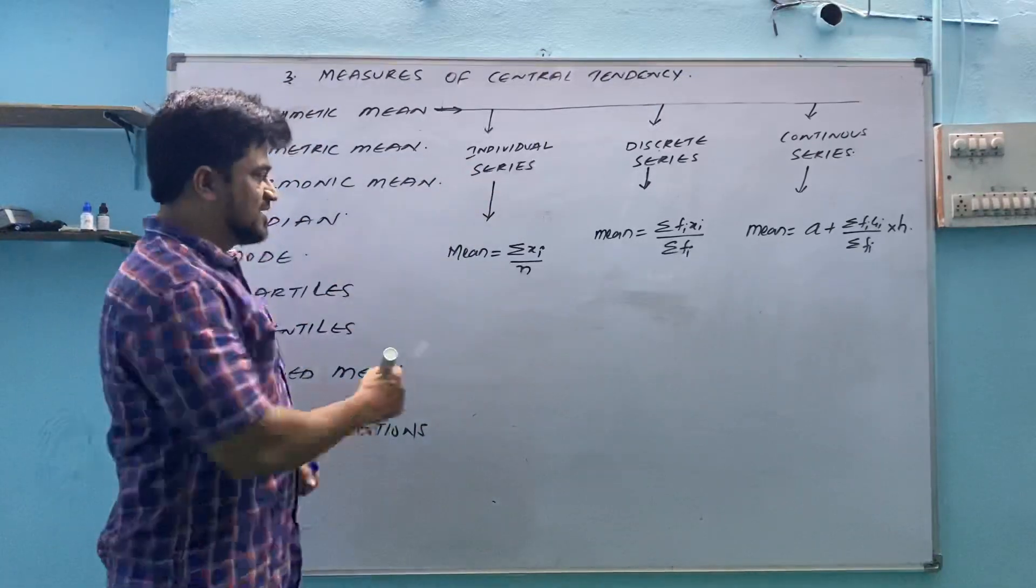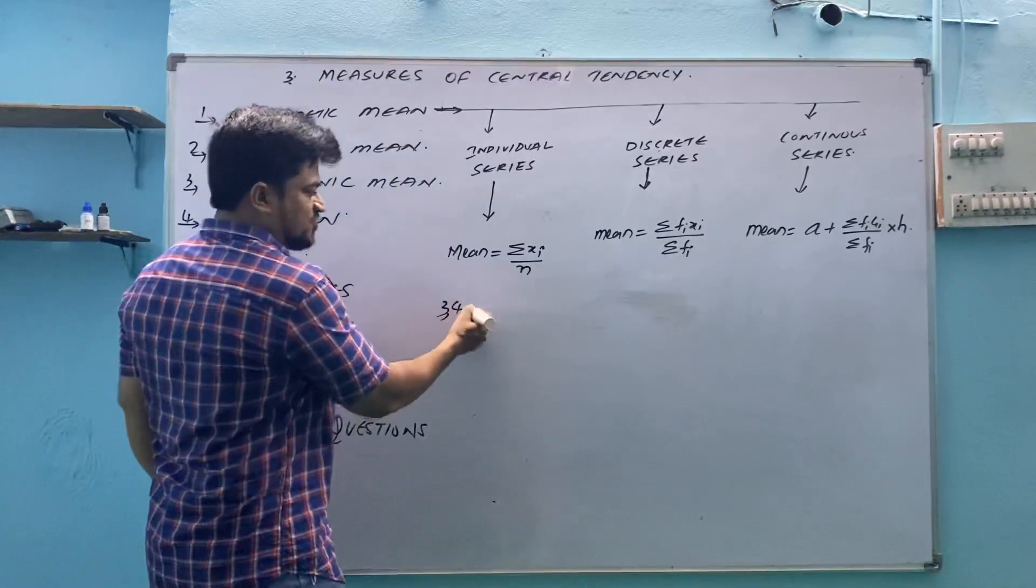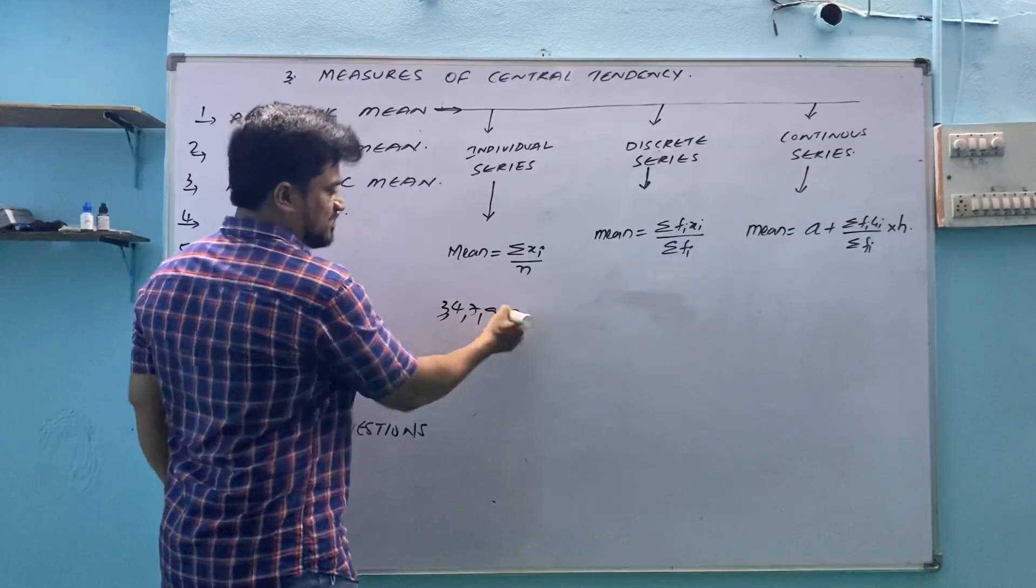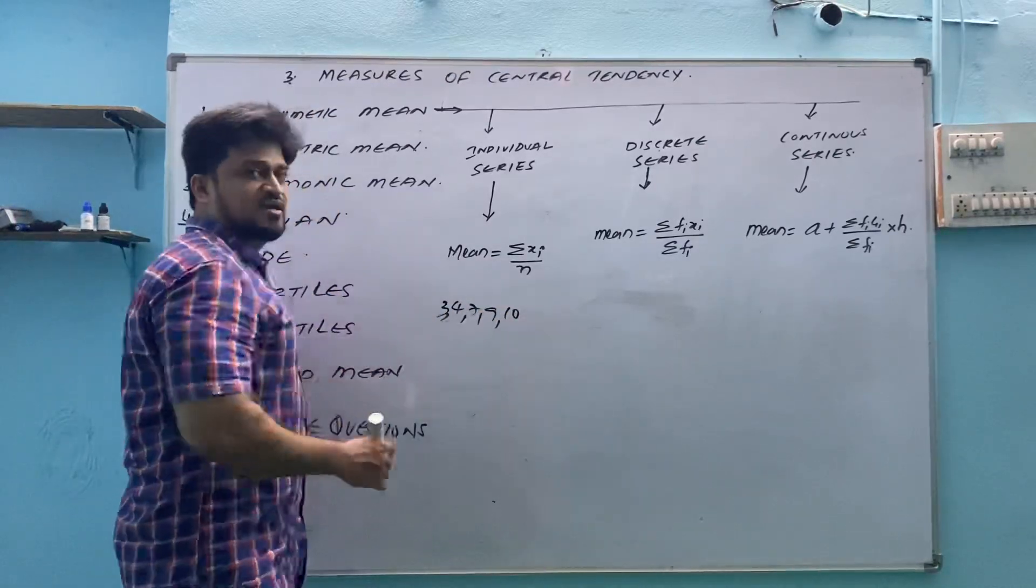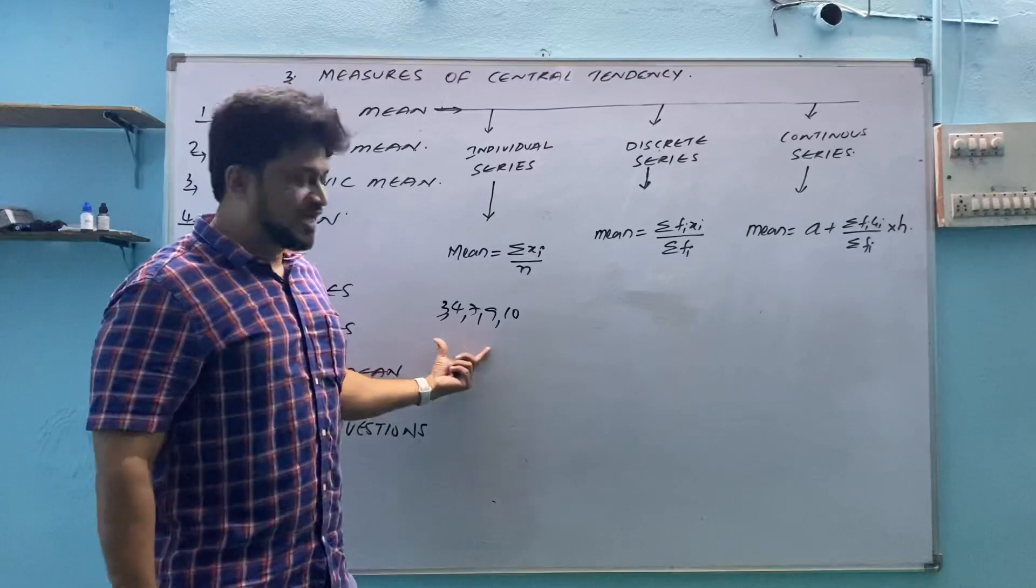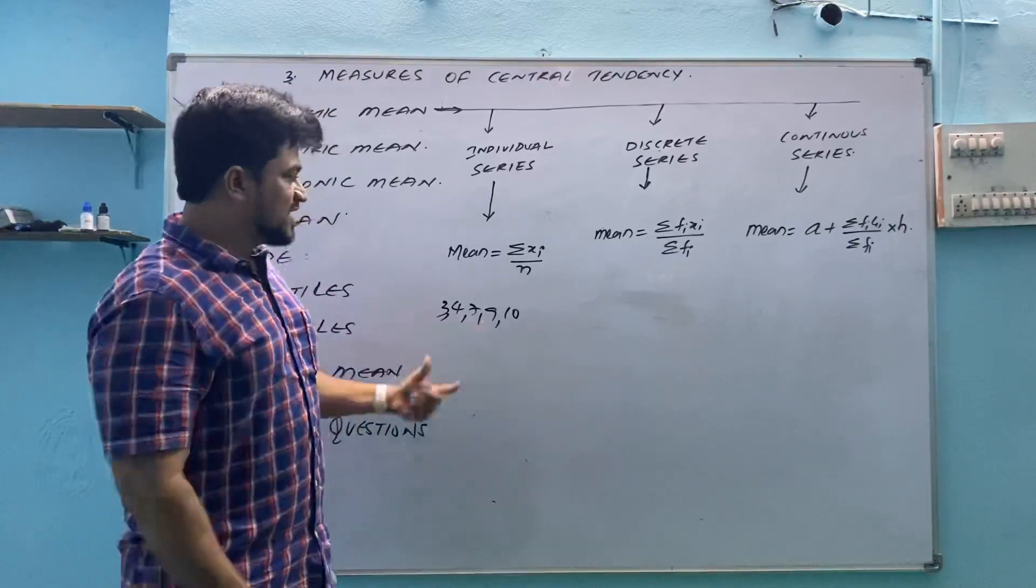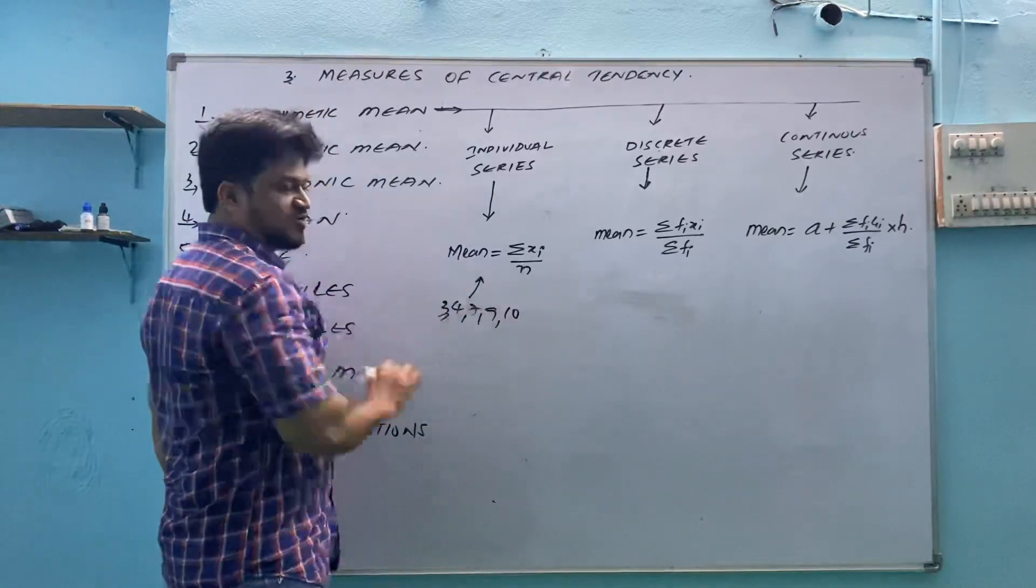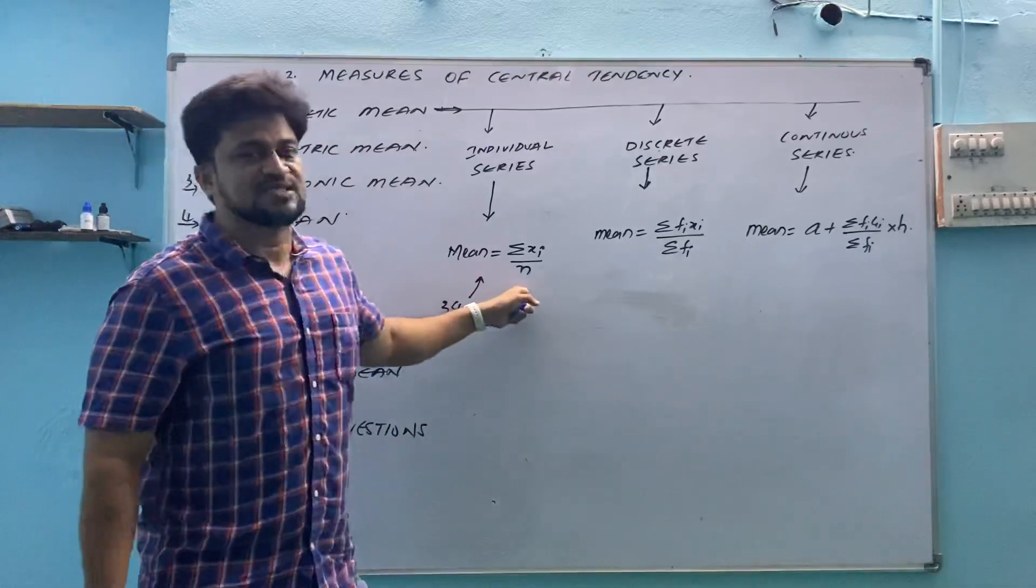One is individual series like any data is given, suppose 3, 4, 7, 9, 10, in this way. Whatever information is without table or whole number and values are given to you, for that information we will use this type of mean, mean equal to sigma xi by n.